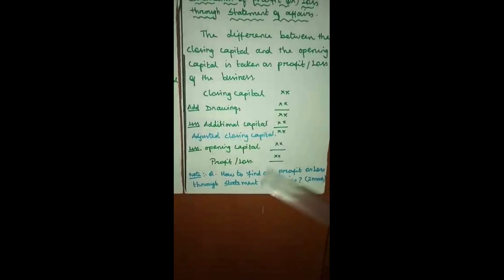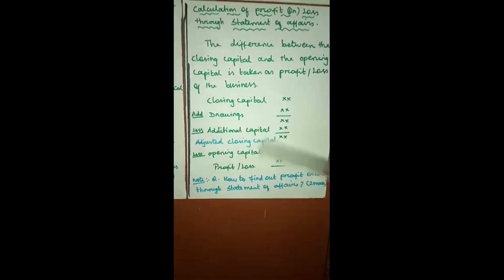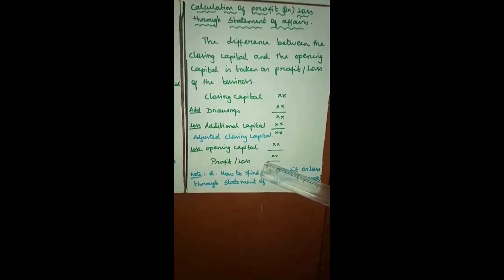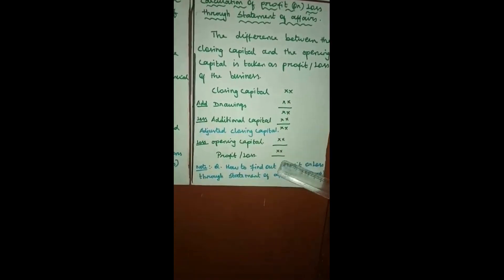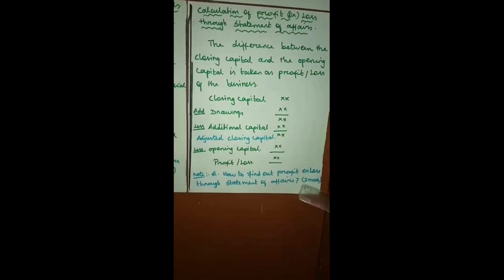Additional capital means the capital introduced during the course of the business. If you introduced additional capital, you should deduct it from the closing capital. The result is called adjusted closing capital. From the adjusted closing capital, deduct the opening capital. If the answer is positive, it is profit; if the answer is negative, it is a loss.